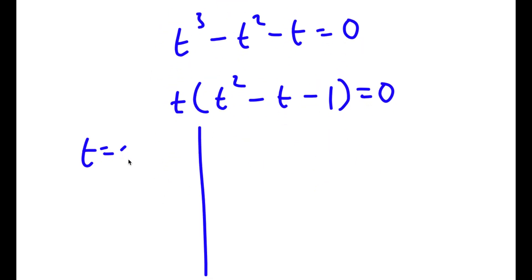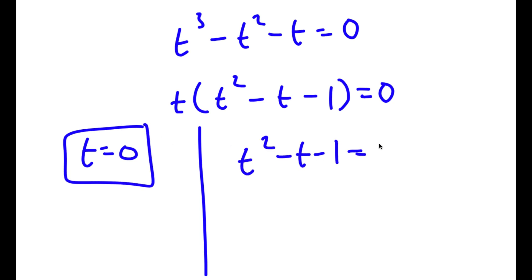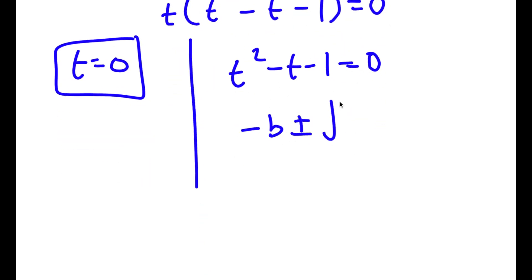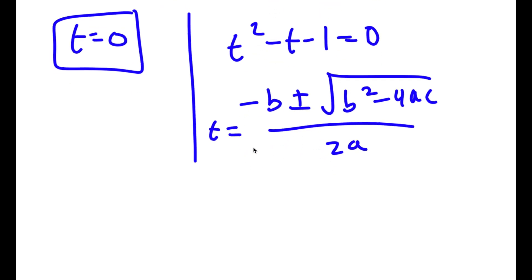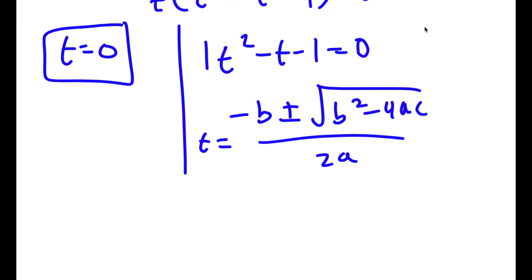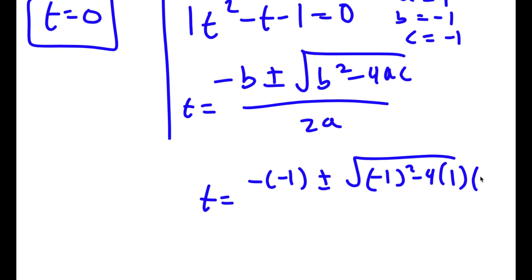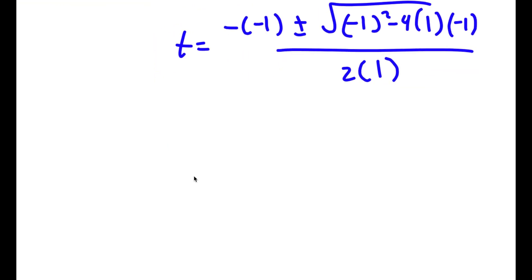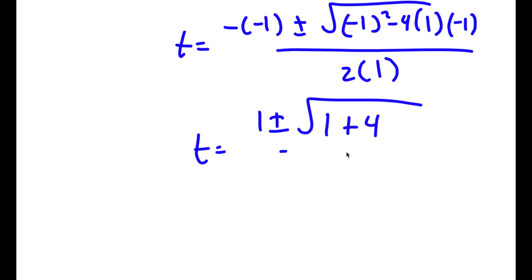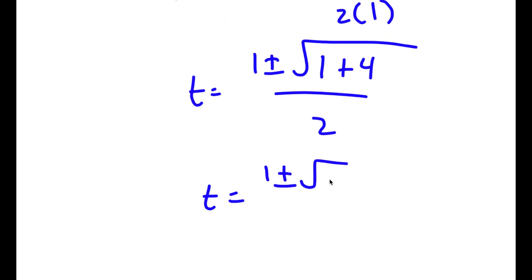This gives two cases: t equals 0, and t squared minus t minus 1 equals 0. To solve t squared minus t minus 1 equals 0 using the quadratic formula — negative b plus or minus square root of b squared minus 4ac over 2a — with a equals 1, b equals negative 1, and c equals negative 1, I get t equals 1 plus or minus the square root of 1 plus 4 over 2, which simplifies to 1 plus or minus the square root of 5 over 2.